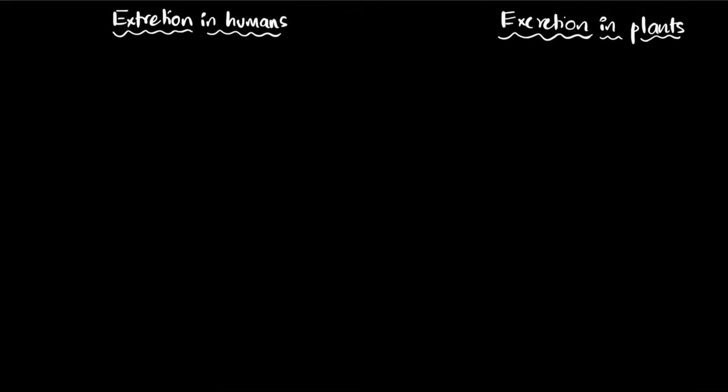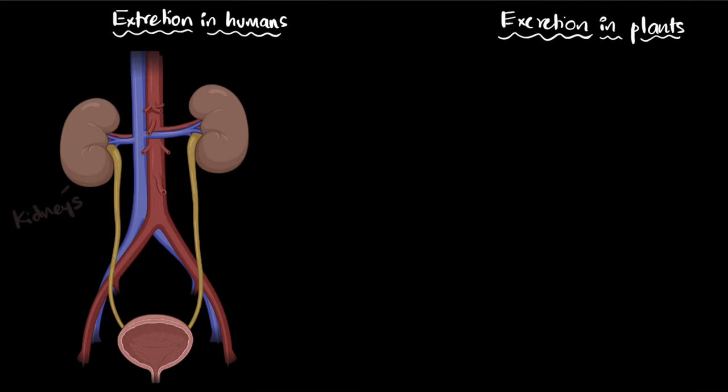Let's explore excretion in humans and in plants. In humans, the main parts of the system are the kidneys, which form the urine, the ureter, which passes the urine down into the bladder where urine is stored until you evacuate it.